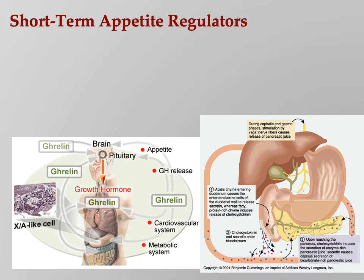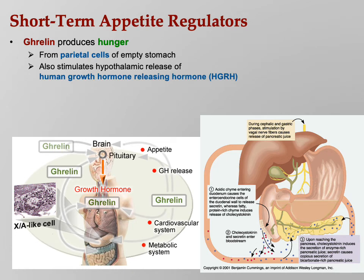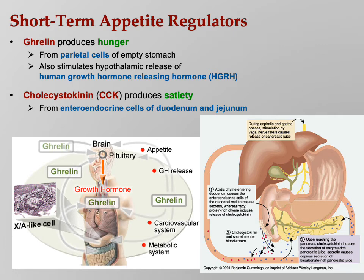Regulating appetite - short term: ghrelin is a hormone that produces hunger from the parietal cells of the empty stomach. Remember to make that chart: name of the secretion, where it's secreted, where it does its job, and what it actually does. Ghrelin comes from the parietal cells, produces hunger in the hypothalamus, and also stimulates hypothalamic release of human growth hormone releasing hormone, which causes the release of human growth hormone. If ghrelin makes you hungry and you eat, you then have the energy you need to grow - it all fits together perfectly. Cholecystokinin (CCK) produces satiety - meaning you feel full - and comes from enteroendocrine cells of the duodenum and jejunum. It has an appetite-suppressing effect on the brain.